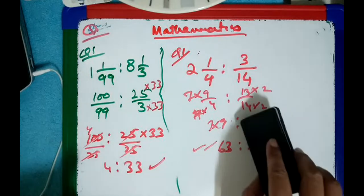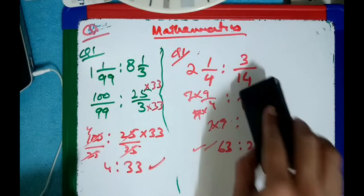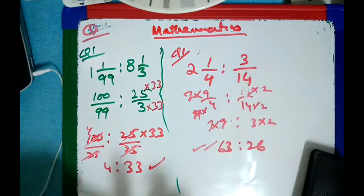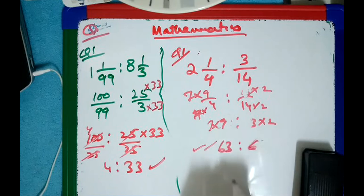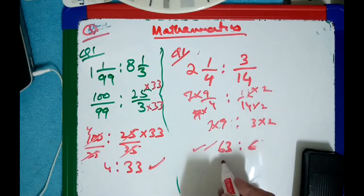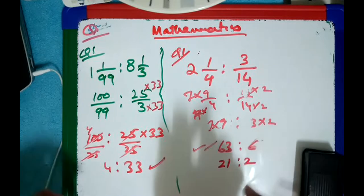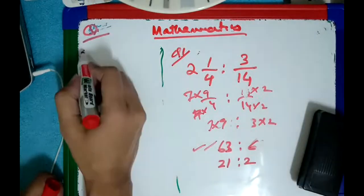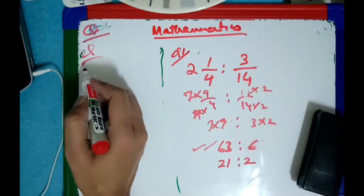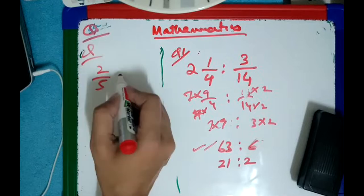I think we did this question before. So you understand now. Now another one I will explain to you, so you will see how we deal with fractions and addition in ratios. We have 3 over 10.